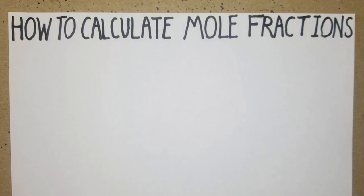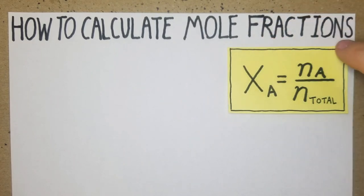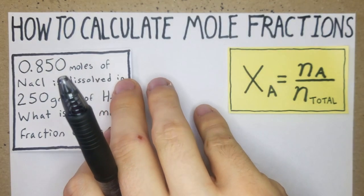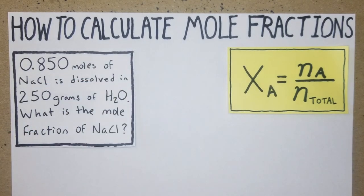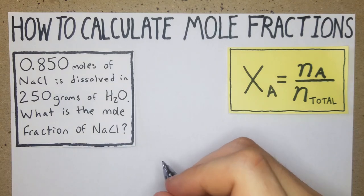How's it going guys, in this video we're going to go over how to calculate mole fractions. We usually use this formula: X_A equals the moles of A over the moles in total. First, we'll start with this one: 0.850 moles of NaCl is dissolved in 250 grams of H2O. What is the mole fraction of NaCl?